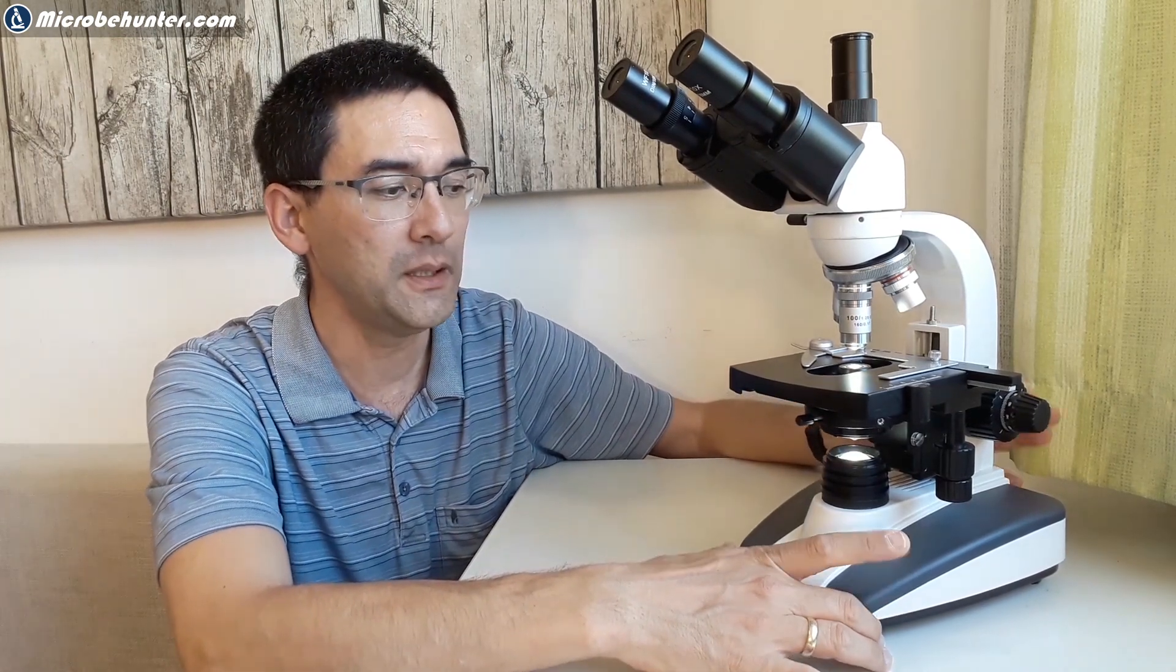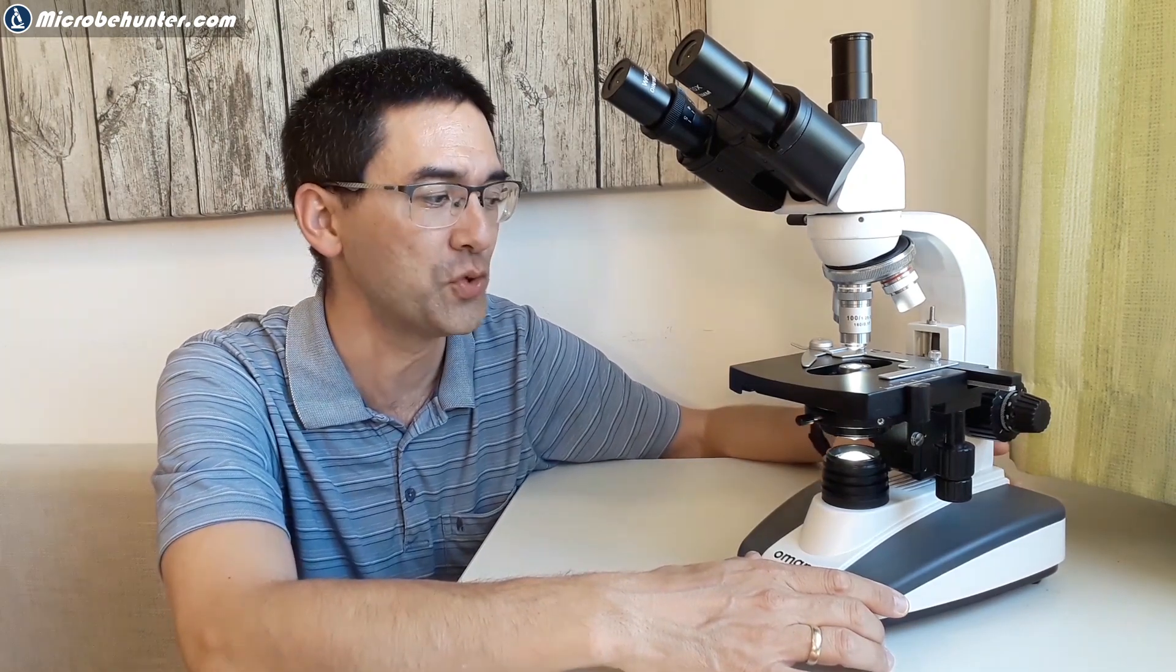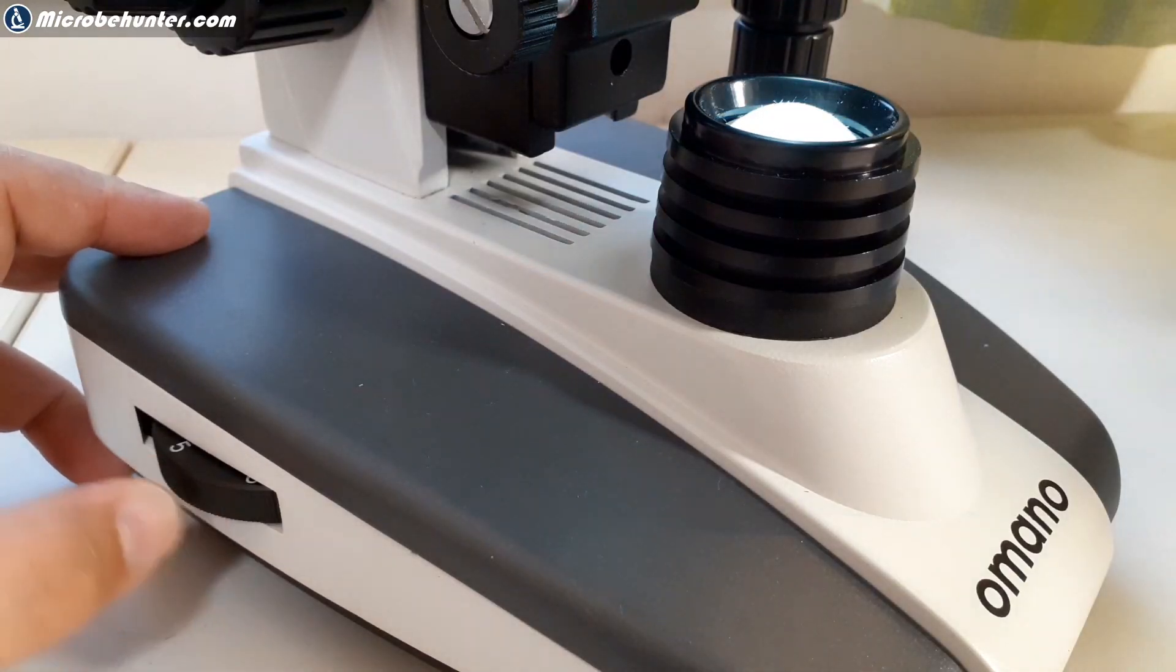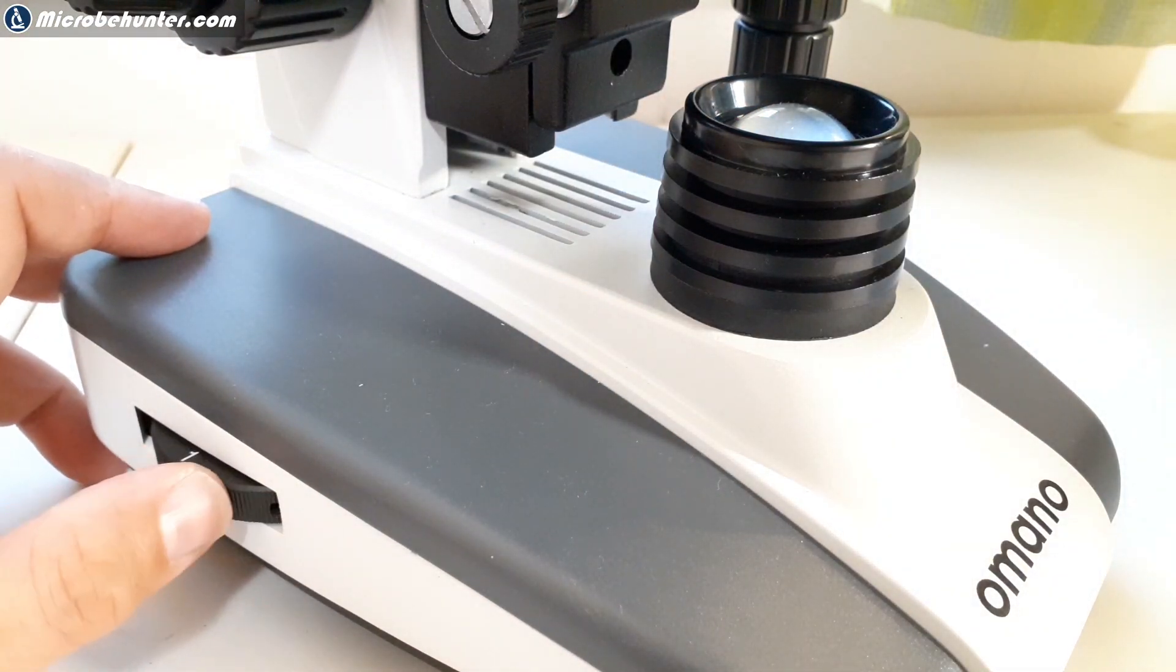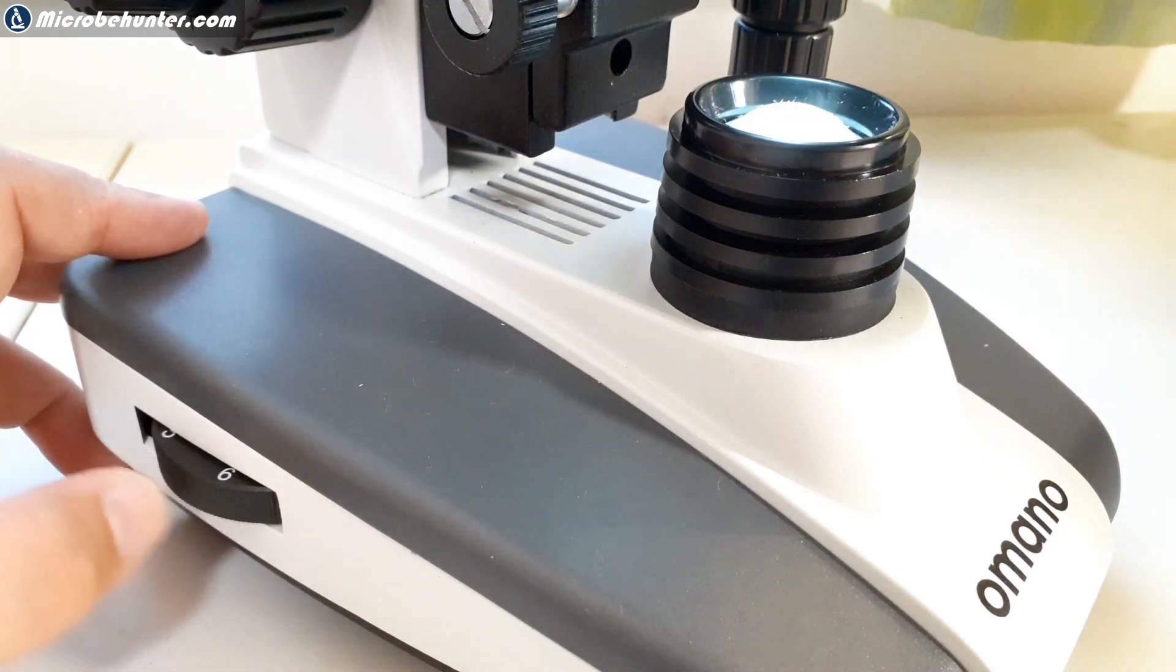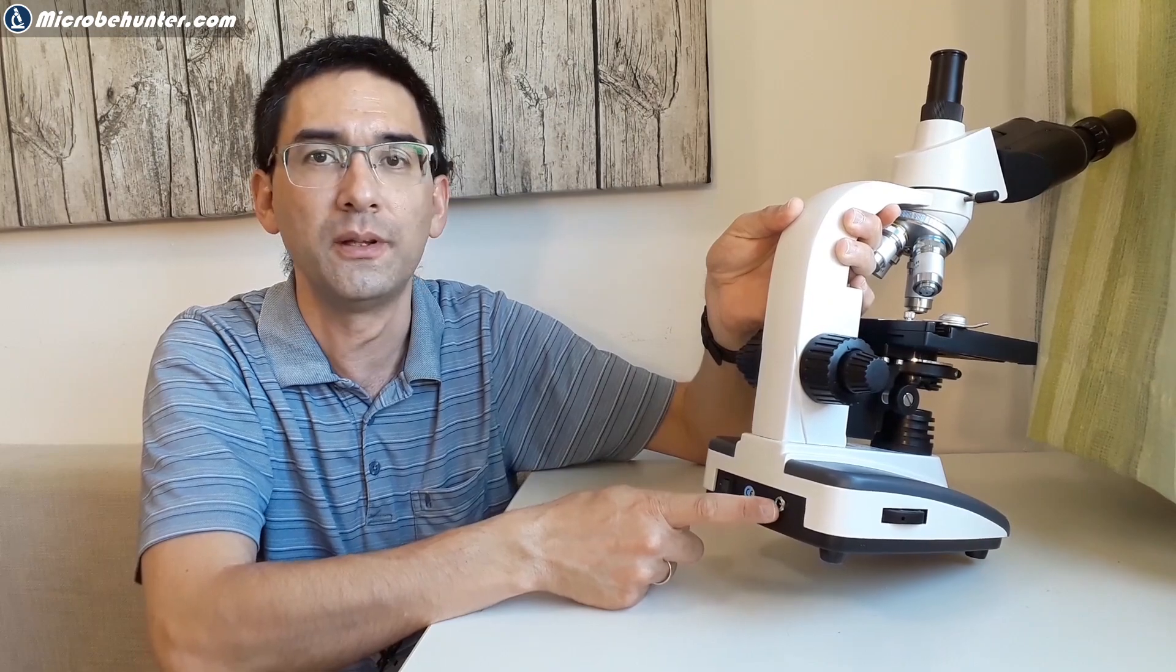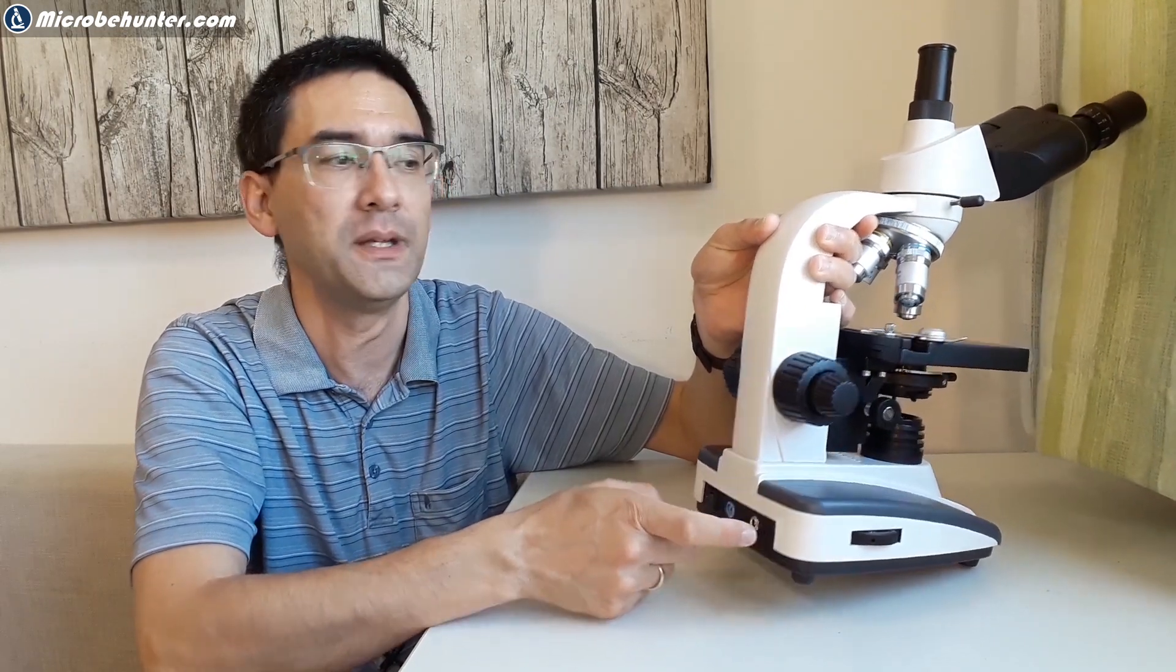It is an LED microscope so when I switch it on here, it can be battery operated but you can also connect an external power source. If I turn it around here there is a light intensity regulator so you can regulate the light intensity. The main switch of the microscope can be found here on the back side and here is the place where the power adapter can be plugged in.